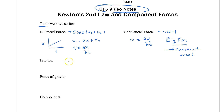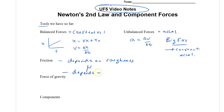We found that friction depends on two things: how rough the surfaces are — we call that the coefficient of friction, mu — and how hard the surfaces push on each other, which is the normal force. So the force of friction equals mu multiplied by the normal force, and it always opposes motion or attempted motion.